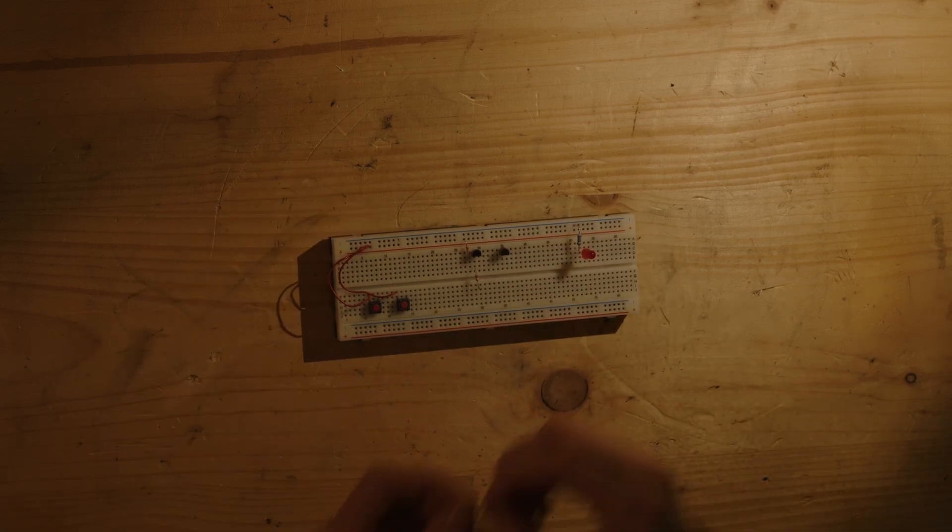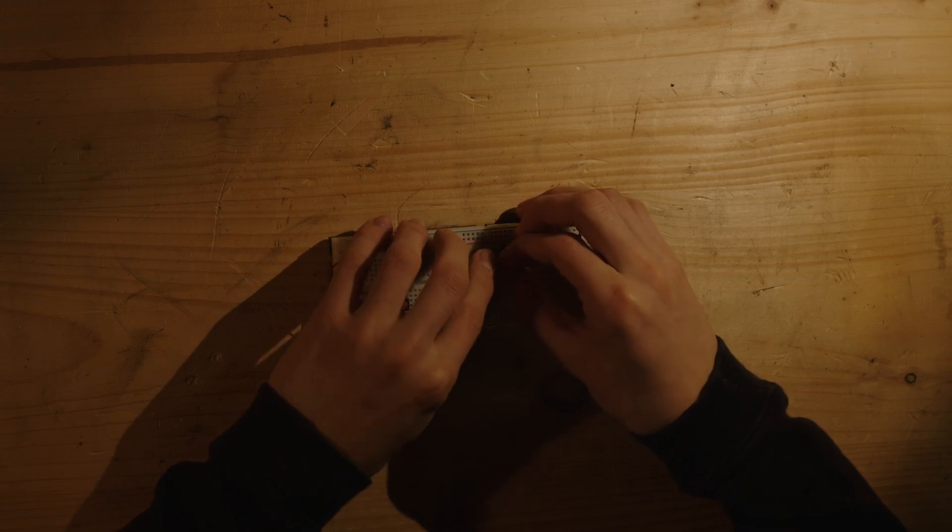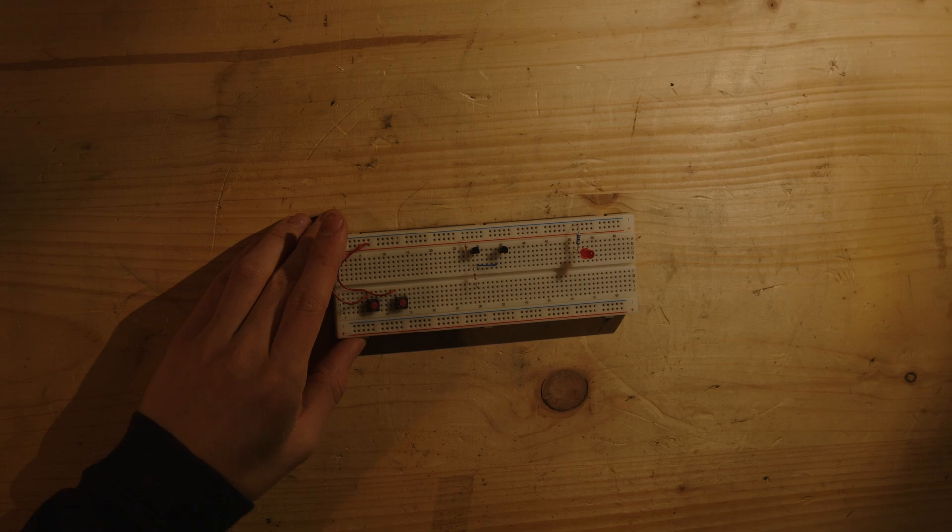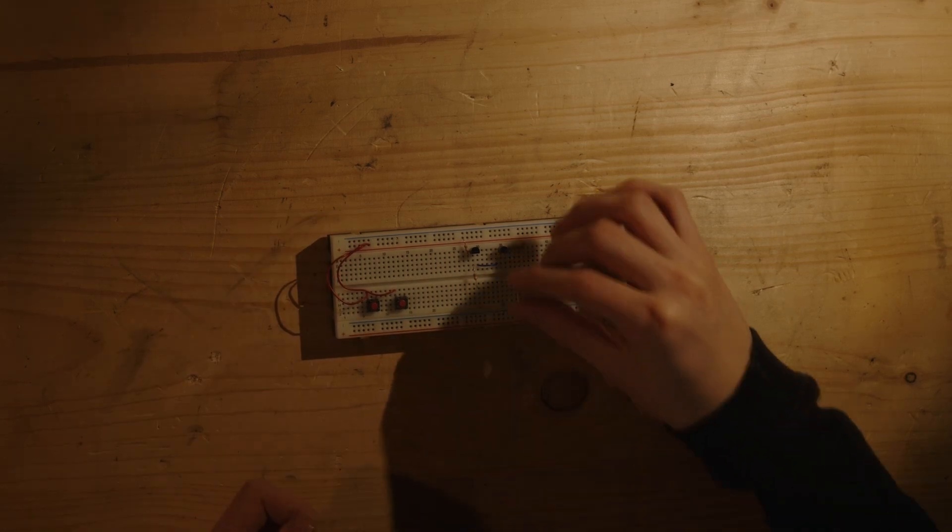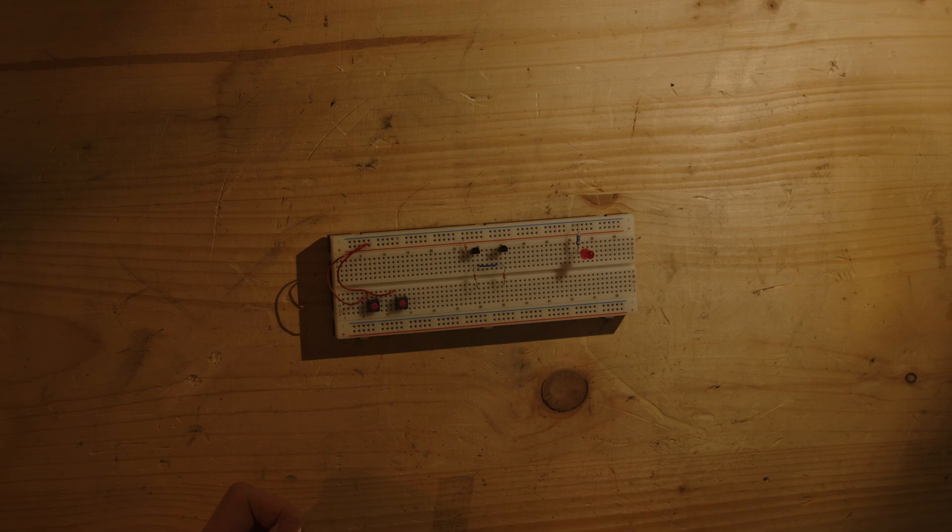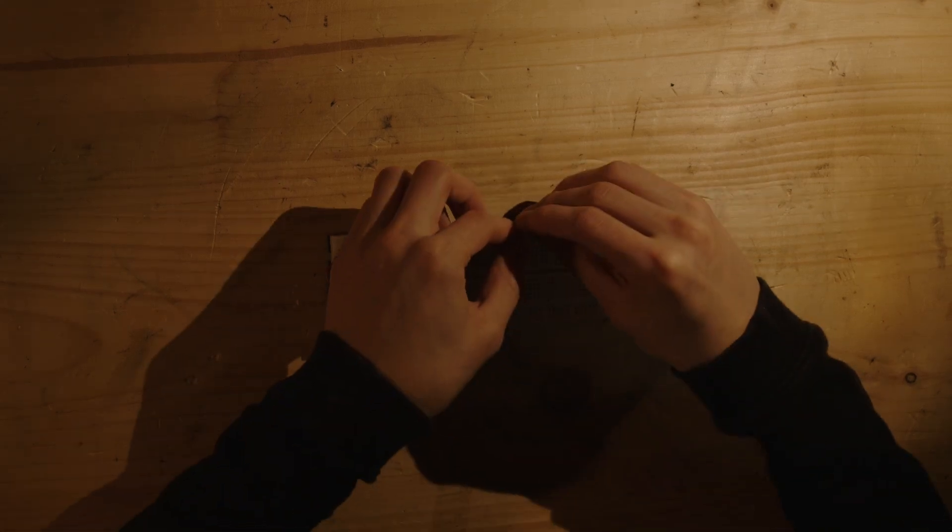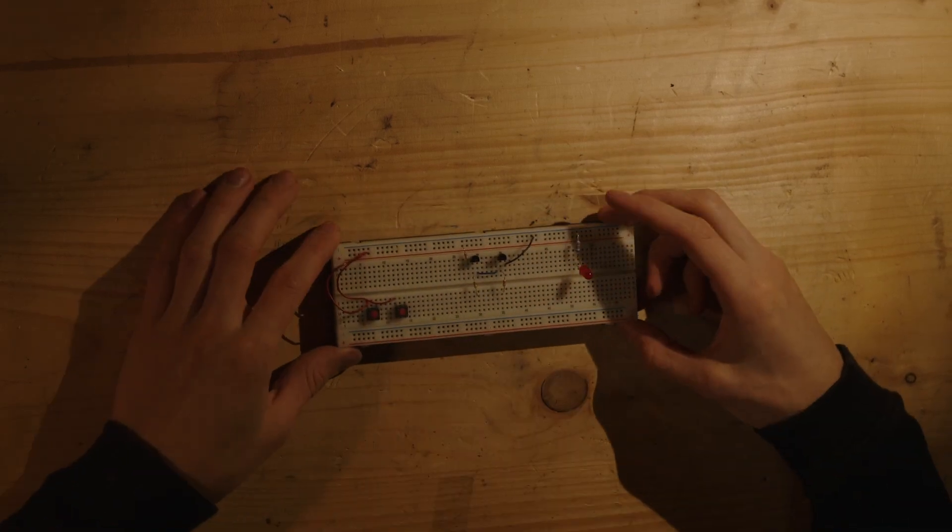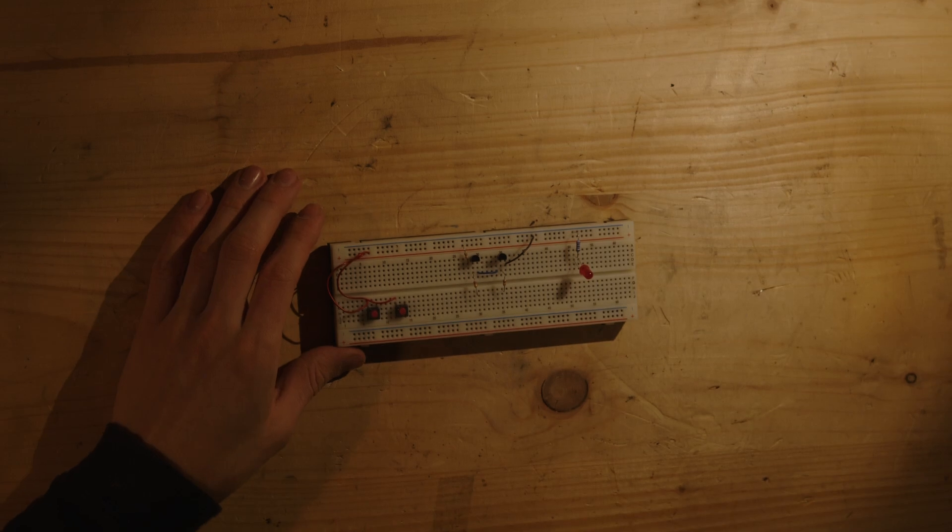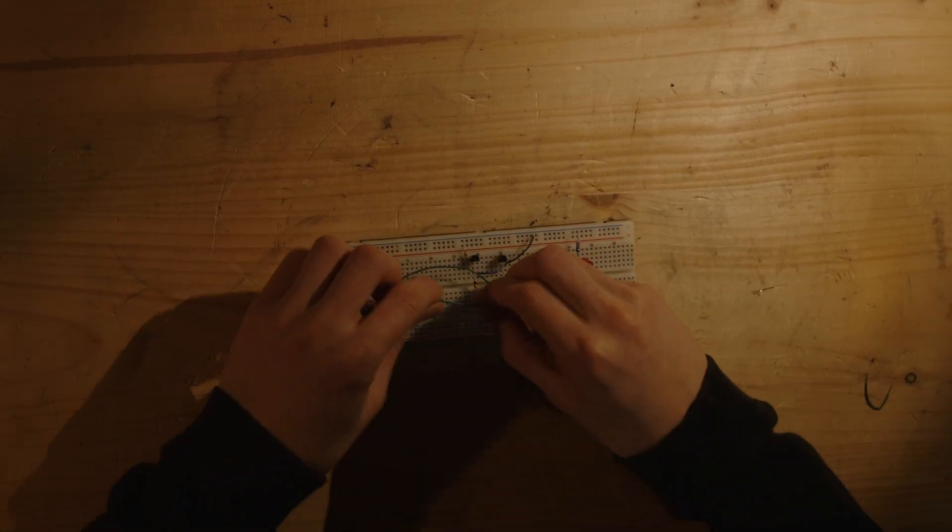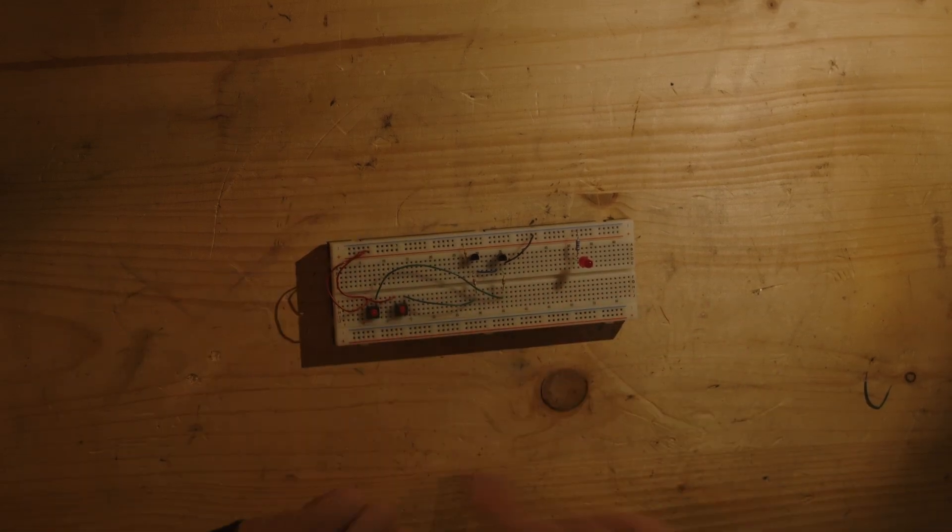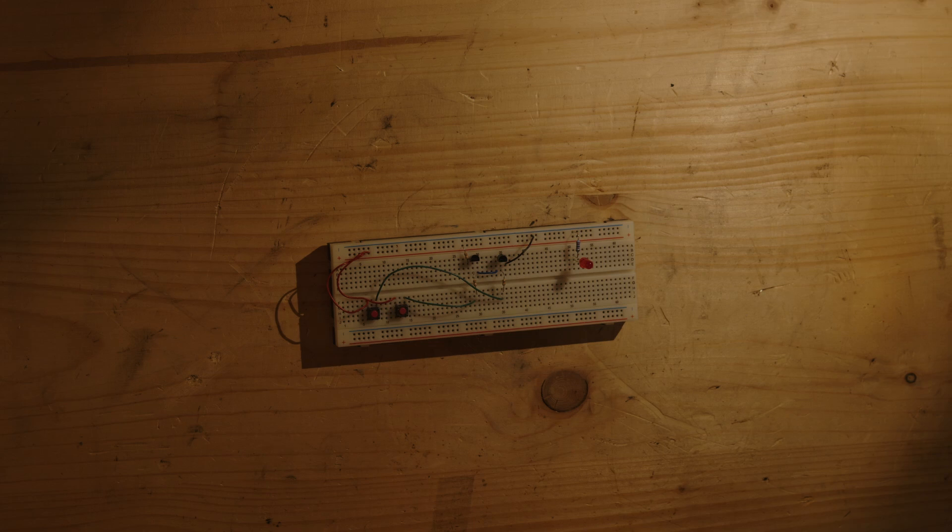Again the second inverter gets protection resistor to the base and then the second resistor gets connected to ground so we essentially just built an inverter but with two transistors in series. Now we're going to hook up the inputs.